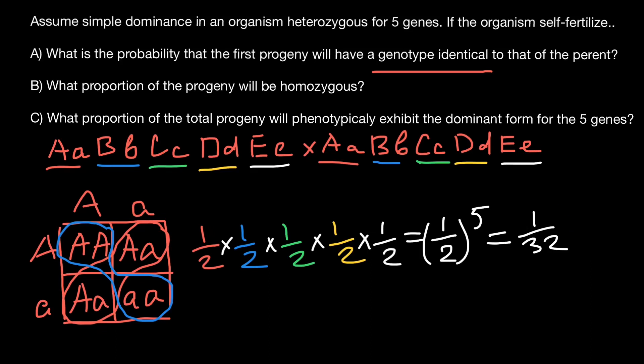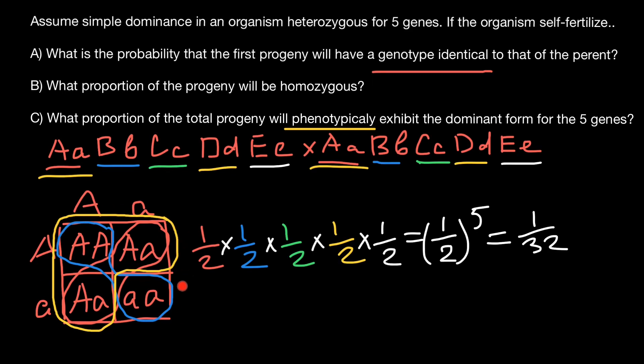And Question C: what proportion of the total progeny will phenotypically exhibit the dominant form of the five genes? Here the important word is 'phenotypically,' and the three genotypes — homozygous dominant, and both heterozygous combinations — would make one dominant phenotype. So the probability for gene A in the progeny, in the F1 generation, to get a dominant phenotype would be three out of four.